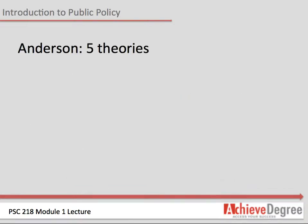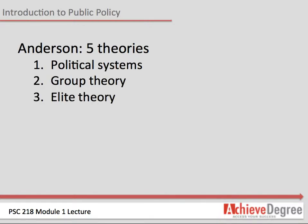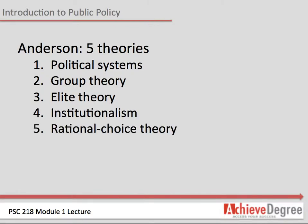Anderson, in the textbook, reviews five theories or approaches that can help one better understand politics and public policy. They include political systems, group theory, elite theory, institutionalism, and rational choice theory. If the political scientist or policy analyst is honest with herself, she would admit that her explanation is just one of many possible explanations. When analyzing policy, it is prudent to consider more than one approach.